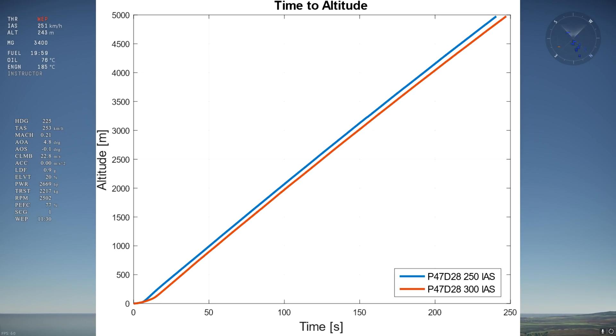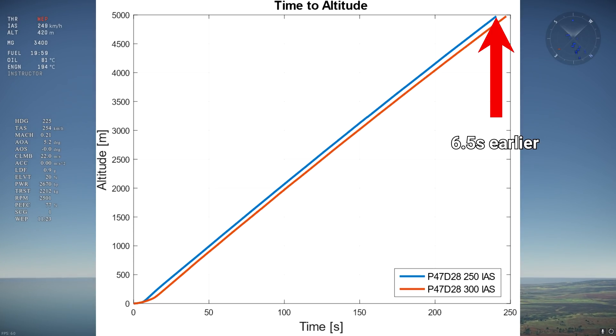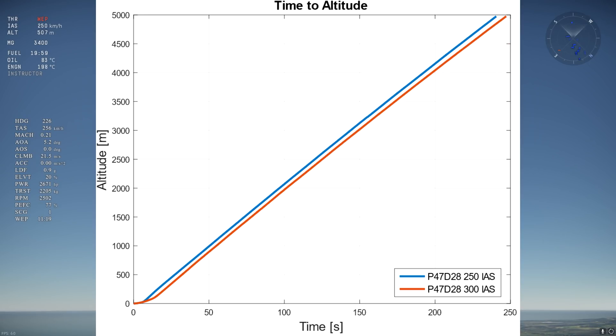What can we conclude from this time to altitude graph? The 250 IES climb reaches 5 km of altitude 6.5 seconds before the 300 IES climb. So can we say that climbing at 250 is more efficient than climbing at 300? We cannot! Don't forget that the P47 had to accelerate for longer to reach the 300 climb speed, unfairly hurting its time to altitude result.